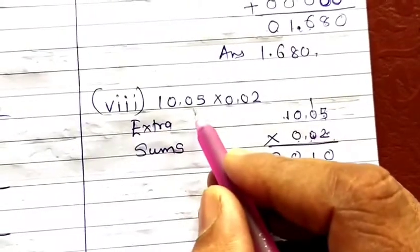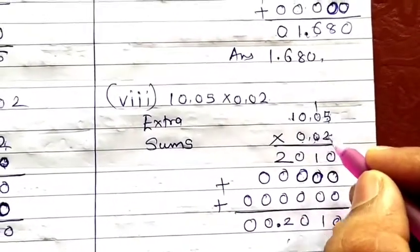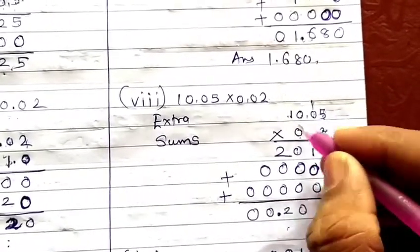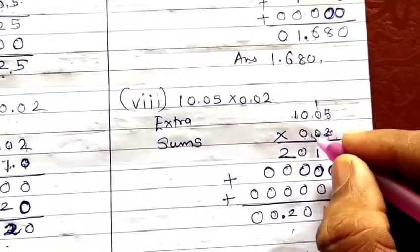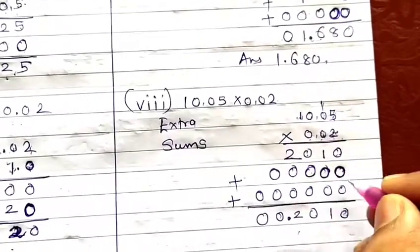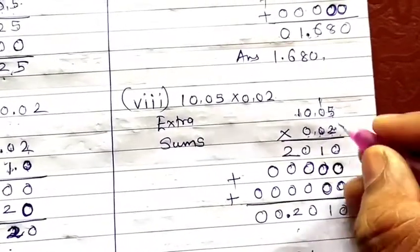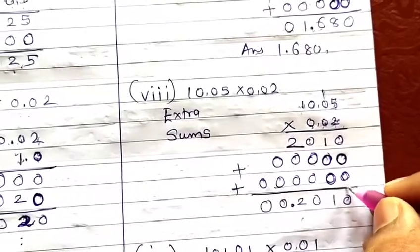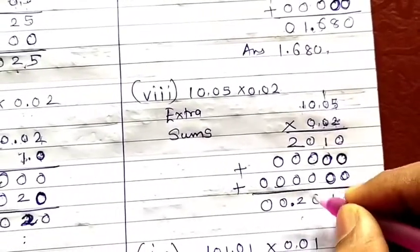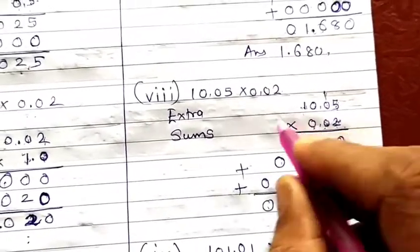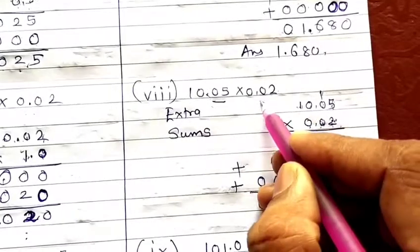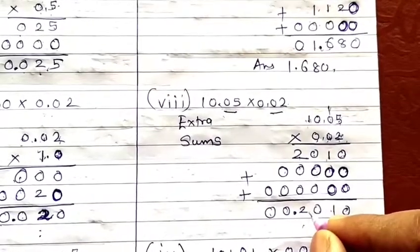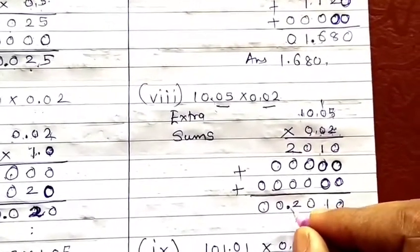The 8th one: 10.05 into 0.02. Multiply 2 by 5 is 10, carry 1; 2 by 0 is 0 plus 1 is 1; 2 by 0 is 0; 2 by 1 is 2. Place a zero by default; multiply 0 by all digits to get 0. Place two zeros by default; multiply 0 again — all zeros. Adding: 0, 1, 0, 2, 0, 0. Count decimals: 2 digits in 10.05 and 2 in 0.02, total 4. Leave 4 digits from the last — answer is 0.2010.